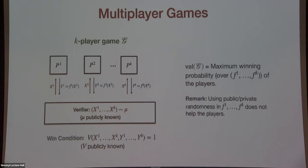We define the value of the game as the maximum winning probability for the players. The probability is over the sampling of X1 through XK from distribution mu, and the max is over strategies F1 through FK. As a remark, if the players use any public or private randomness, the value cannot improve — we can just fix the optimal randomness. The value is the expectation over that randomness, and we can fix the best one.